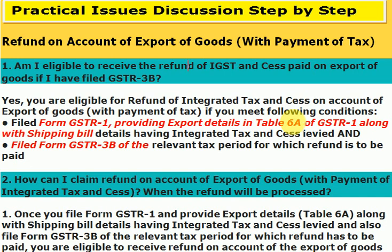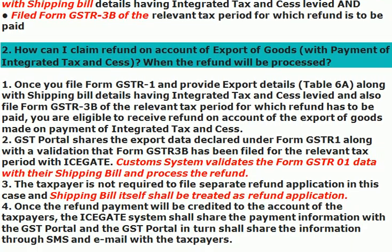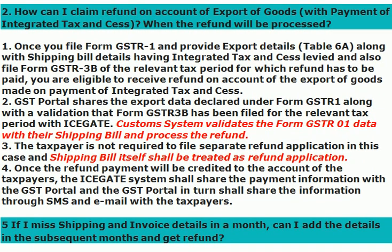We are exporting with IGST payment. Second, regarding a separate application: if you are exporting without payment of taxes you need to file a separate application, but if you are exporting with payment of taxes you do not need to file any separate application. Simply file GSTR-1 with Table 6A shipping bill details, then file GSTR-3B. The GST portal shares data with ICEGATE, the customs gateway, which validates the shipping bill and processes the refund.